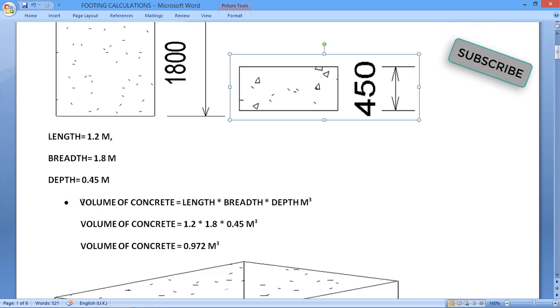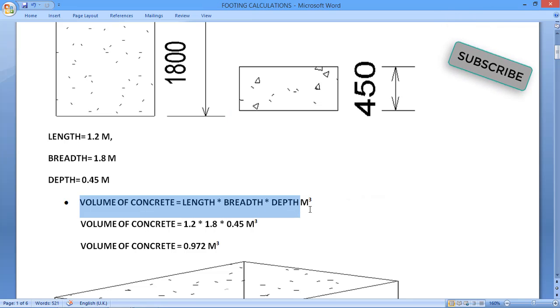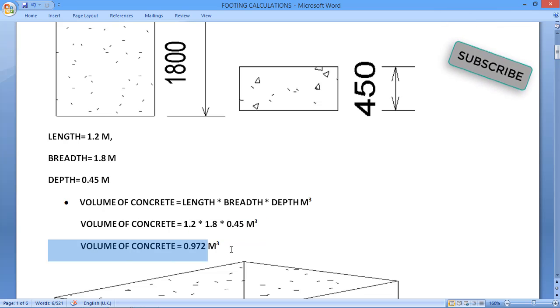Now we have to calculate the volume of concrete. For volume of concrete, we have the formula: length times breadth times depth cubic meter. So values are 1.2 by 1.8 by 0.45 cubic meter. We'll get our volume of concrete as 0.972 cubic meter.